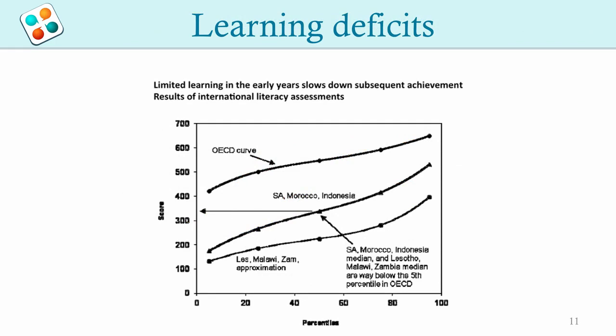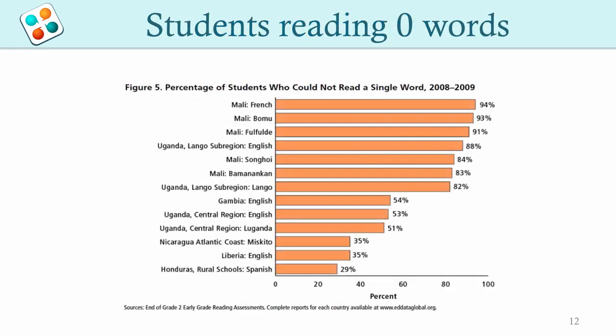International assessments show that learning deficits in the early years accumulate, and low performers cannot catch up on their own. The median child in low-income countries performs only around the 5th percentile of children in OECD countries. This graph shows the percentage of students reading zero words per minute in the early grade reading assessment: 25 to 75% of students from grades 2 to 4 in various low-income countries could not read a single word.